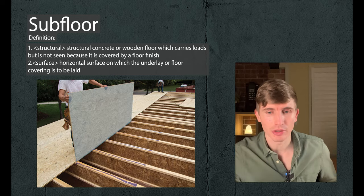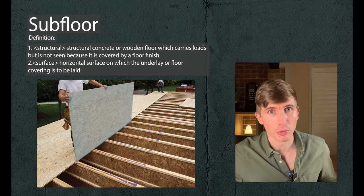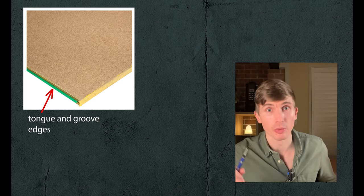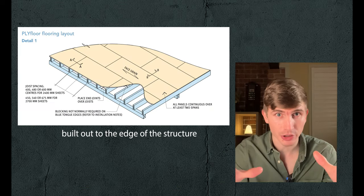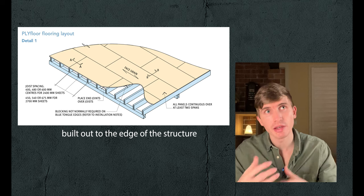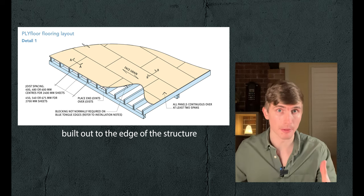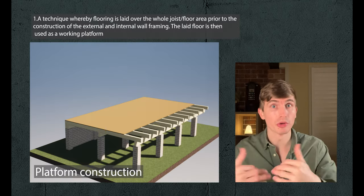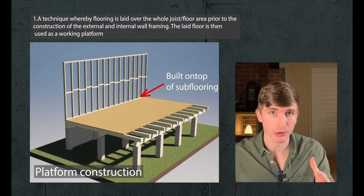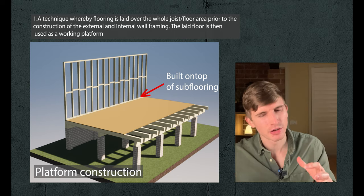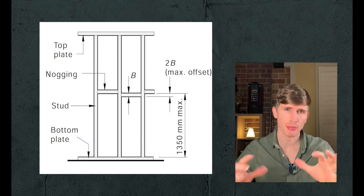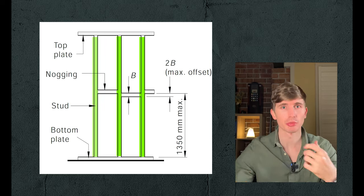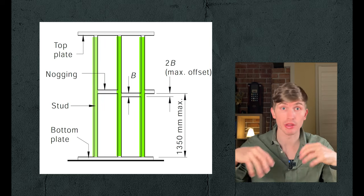The floor joists then get covered with subfloor. Subflooring is typically sheets of plywood or particle board sheet flooring with tongue and groove edges that interlock. This is built out to the edge of the structure, then everything above this point — including the walls themselves — sits on top of the subflooring. This is known as platform construction, and it also gives a surface for framing to be assembled on.